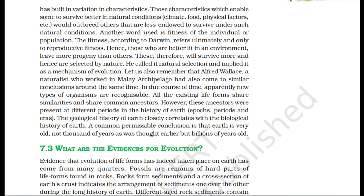Many life forms do not exist anymore. There had been extinctions of different life forms, just as new forms of life arose at different periods in the history of Earth. There has been gradual evolution of life forms. Any population has built-in variation in characteristics. Those characteristics which enable some to survive better in natural conditions — climate, food, physical factors — would outbreed others less endowed to survive. Those who are better fit in an environment leave more progeny than others and are selected by nature.